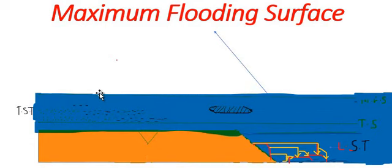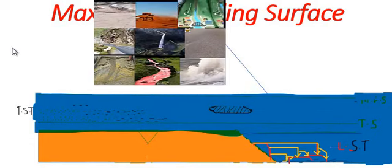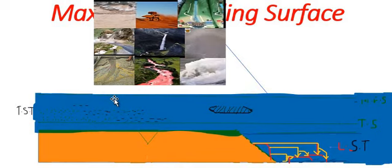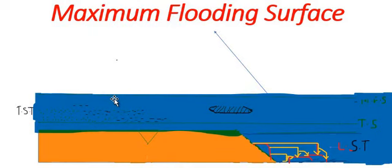The sediment supply from the land environment is greatly decreased. There is starvation of clastic sediment, which forms marine condensation.